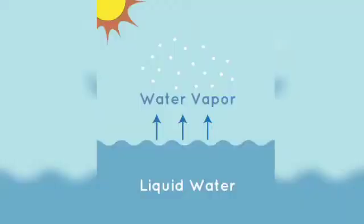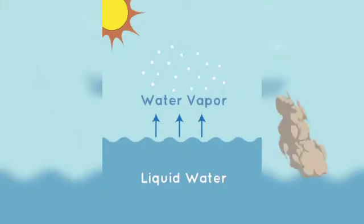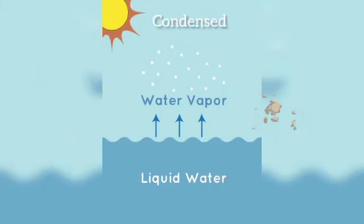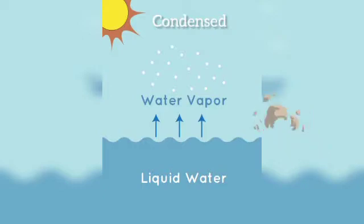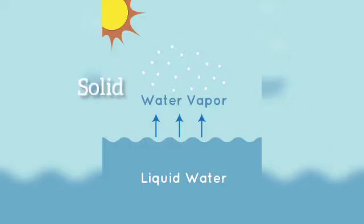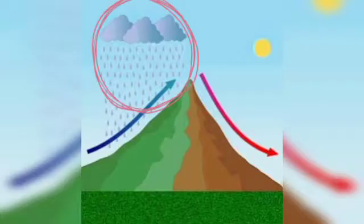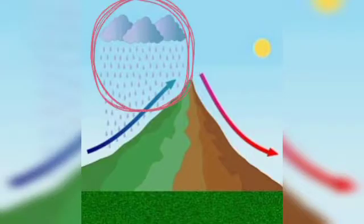As water vaporizes, it cools and eventually condenses, usually on tiny particles of dust in the air. When it condenses, it becomes liquid water again, or turns directly into a solid. These water droplet particles then collect and form clouds.